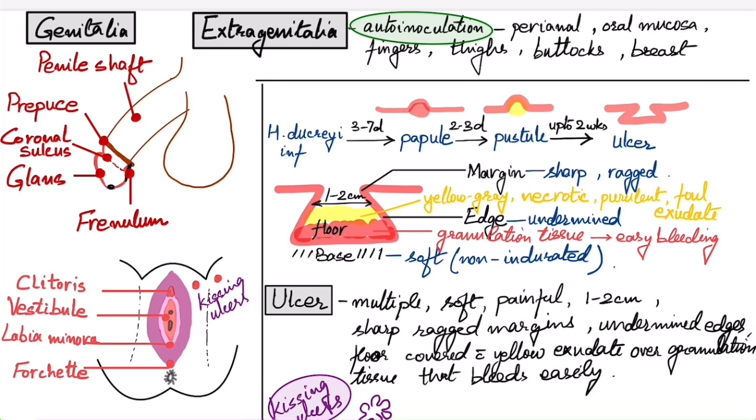In males, the ulcer and the bubo are the main presenting features. In females, the ulcer is not the presenting feature due to anatomical differences. It is usually dysuria, dyspareunia, and dyschezia. These are the presenting features or the symptoms in females.